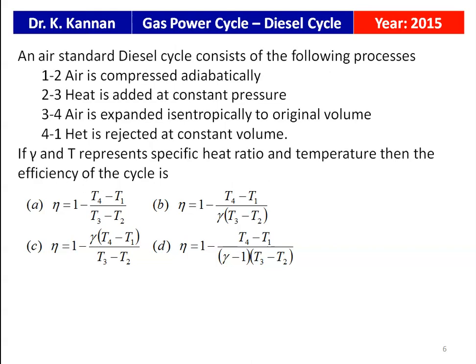This question is from the 2015 question paper. An air standard diesel cycle consists of: 1 to 2, air is compressed adiabatically; 2 to 3, heat is added at constant pressure; 3 to 4, air is expanded isentropically to original volume; and 4 to 1, heat is rejected at constant volume. If γ and T represent the specific heat ratio and temperature, then the efficiency of the cycle has four options: option A: η = 1 − (T4 − T1)/(T3 − T2); option B: η = 1 − (T4 − T1)/(γ(T3 − T2)); option C: η = 1 − γ(T4 − T1)/(T3 − T2); option D: η = 1 − (T4 − T1)/((γ − 1)(T3 − T2)).